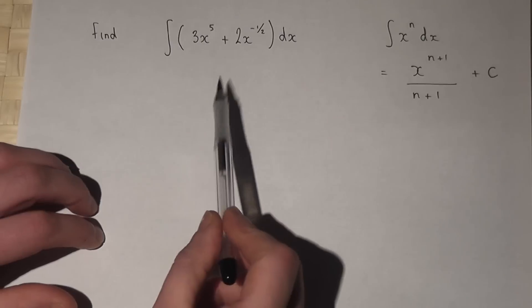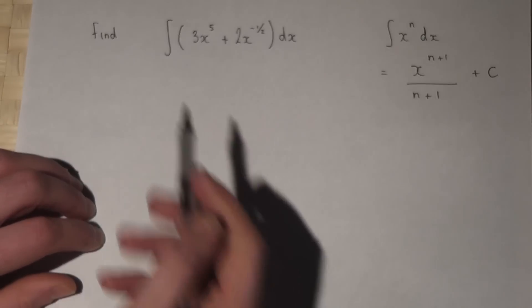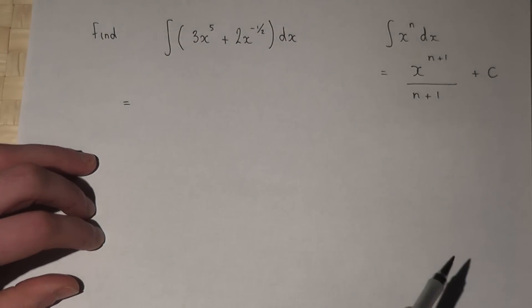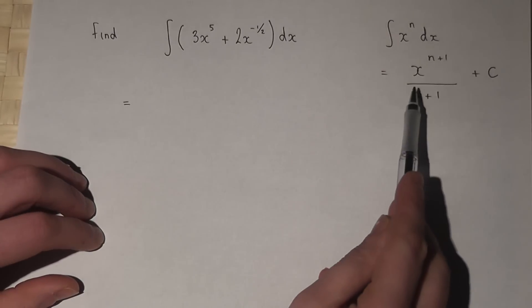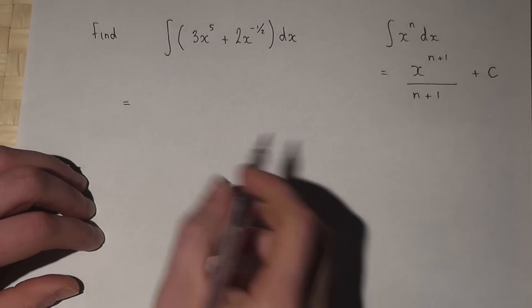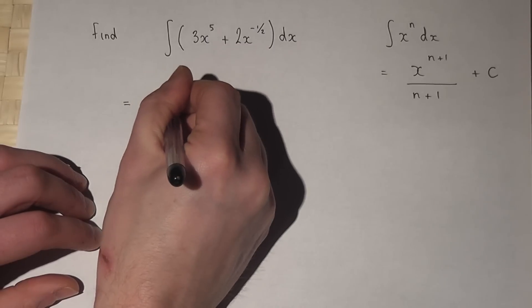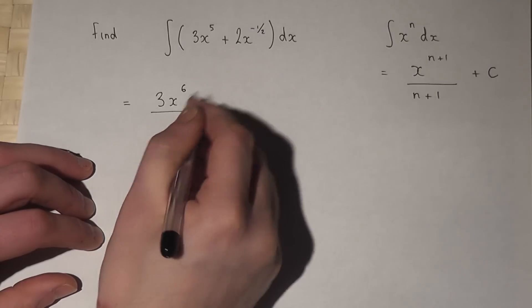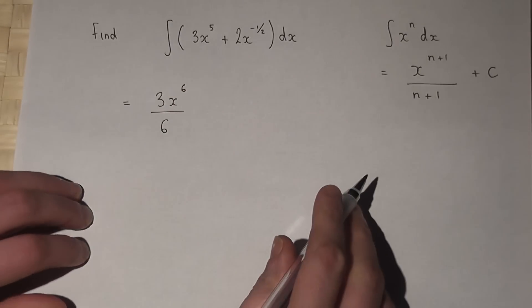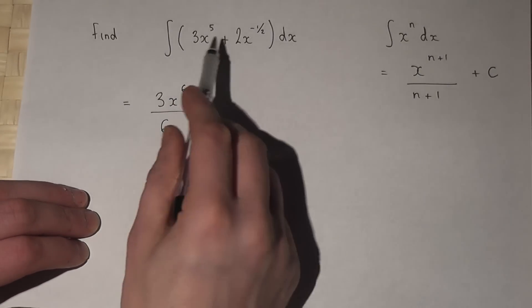So to integrate this we have to integrate both terms separately. We add 1 to the power and divide by the new power. 3x to the 5 plus 1 is 6 divided by the new power over 6. That's the first term.